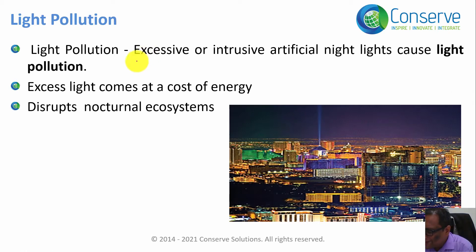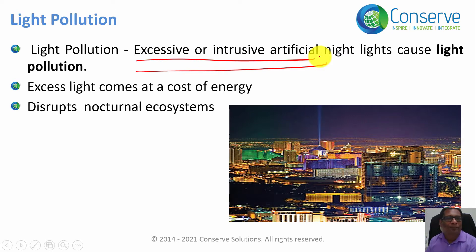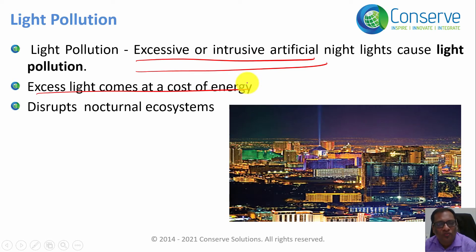Light pollution is excessive or intrusive artificial light in the nighttime. Why is it important to reduce light pollution? First, excess light comes at a cost of energy. Energy consumption means environmental pollution — we are burning a lot of fossil fuel, which results in environmental pollution. So excess light must be reduced.